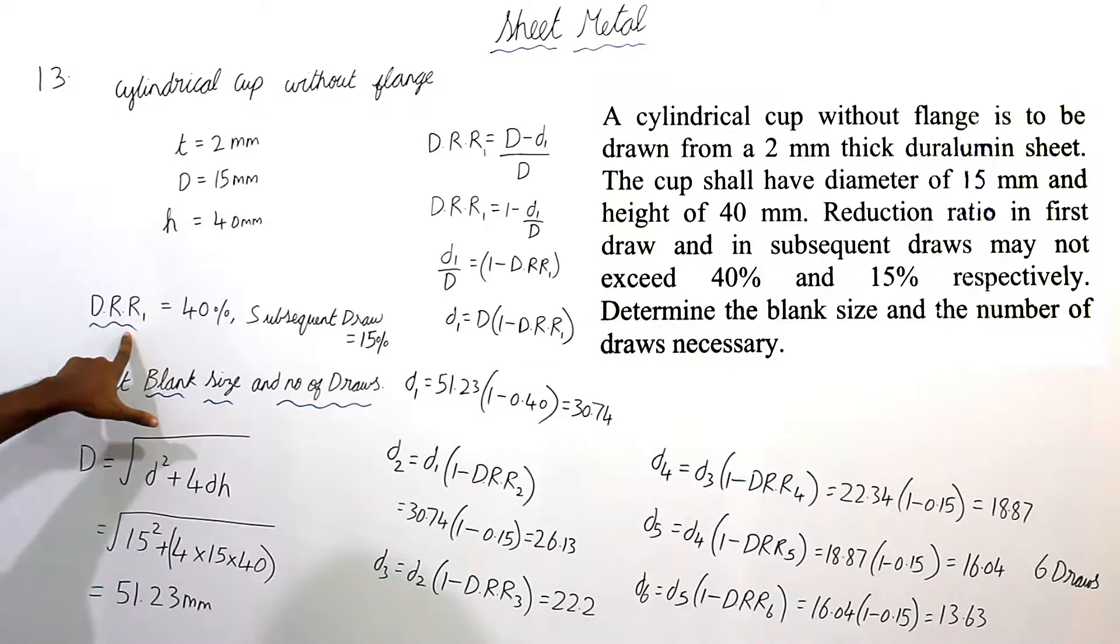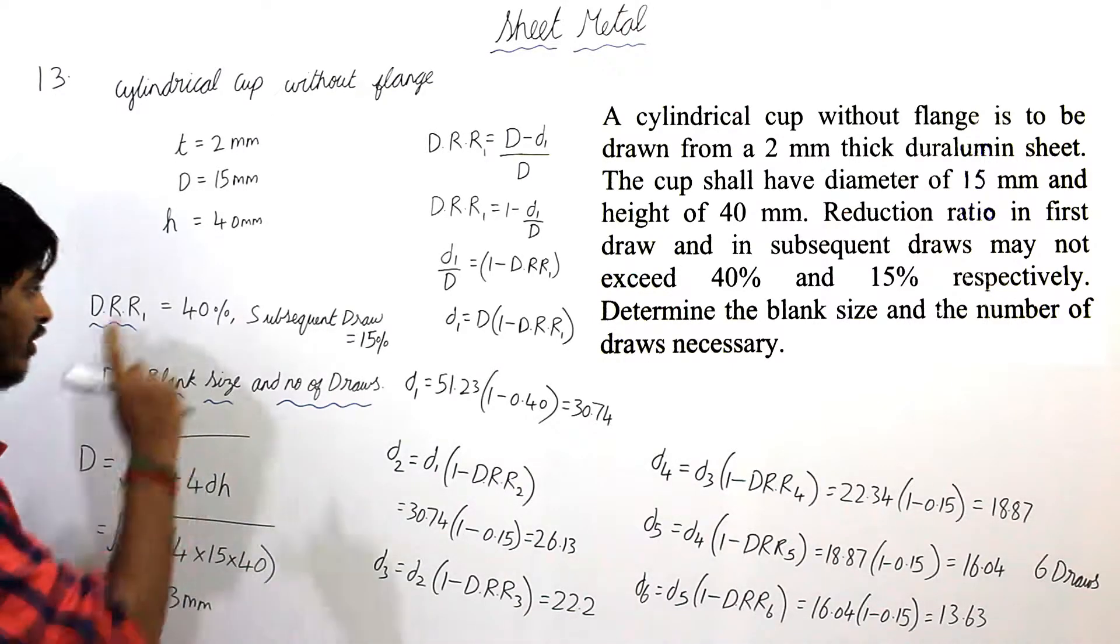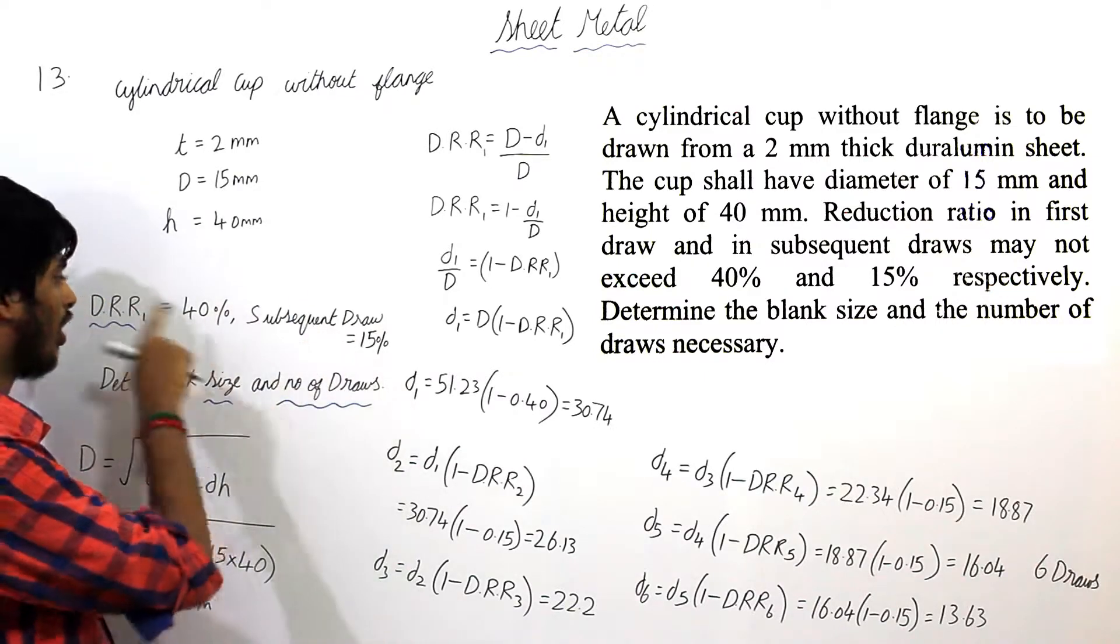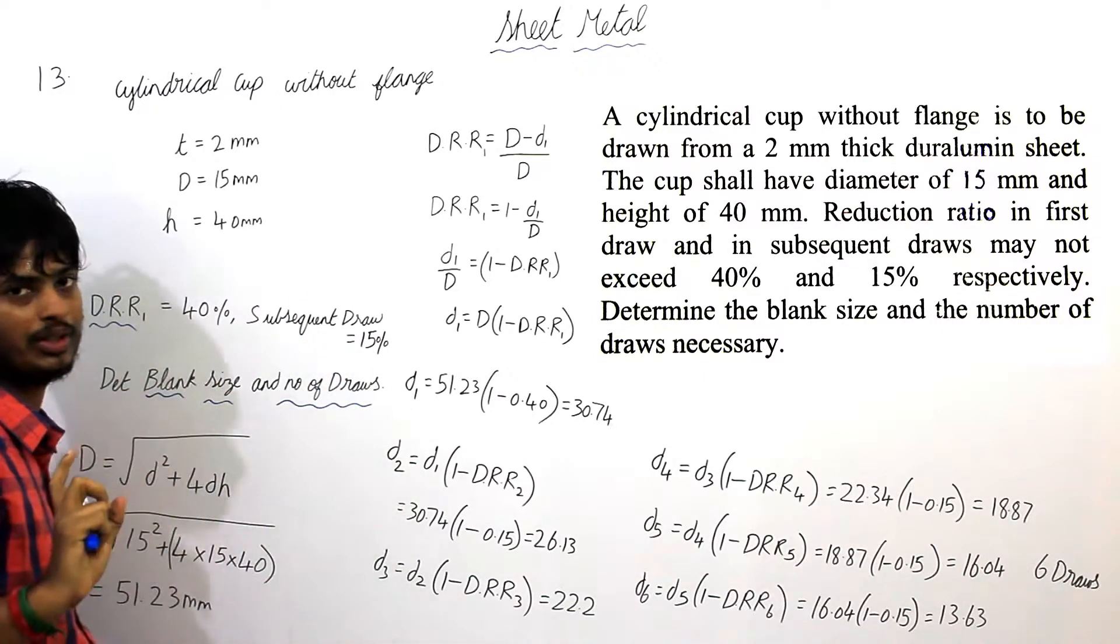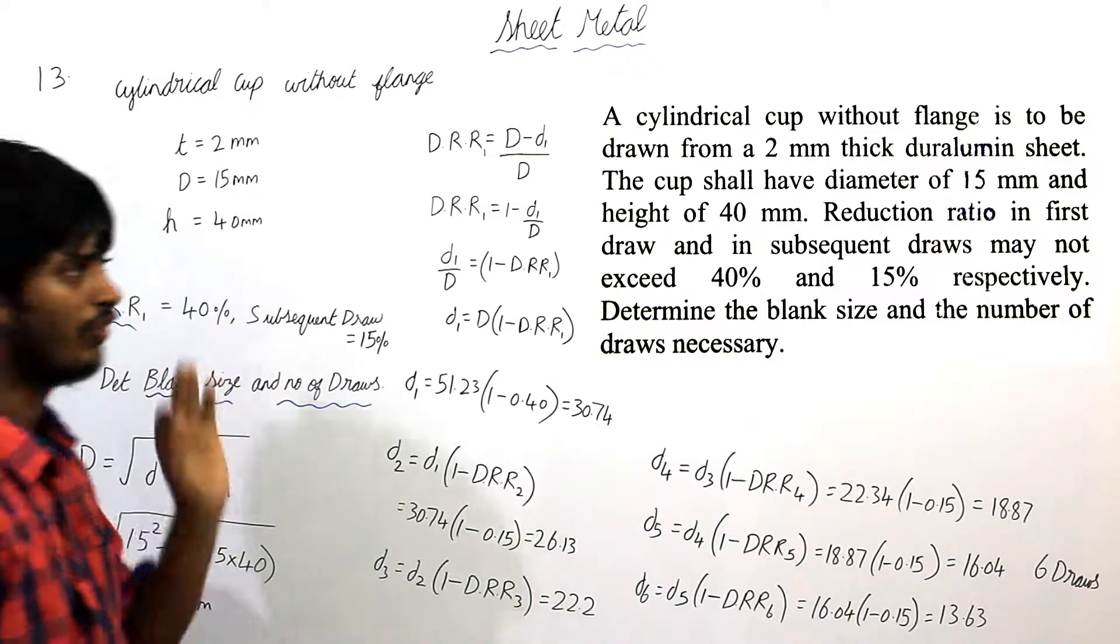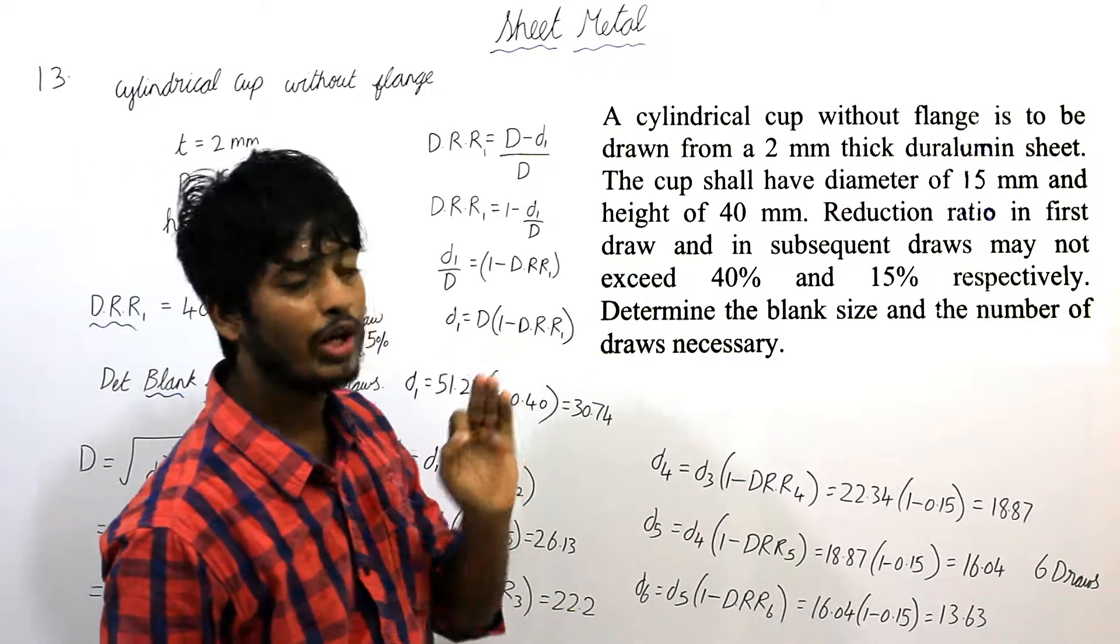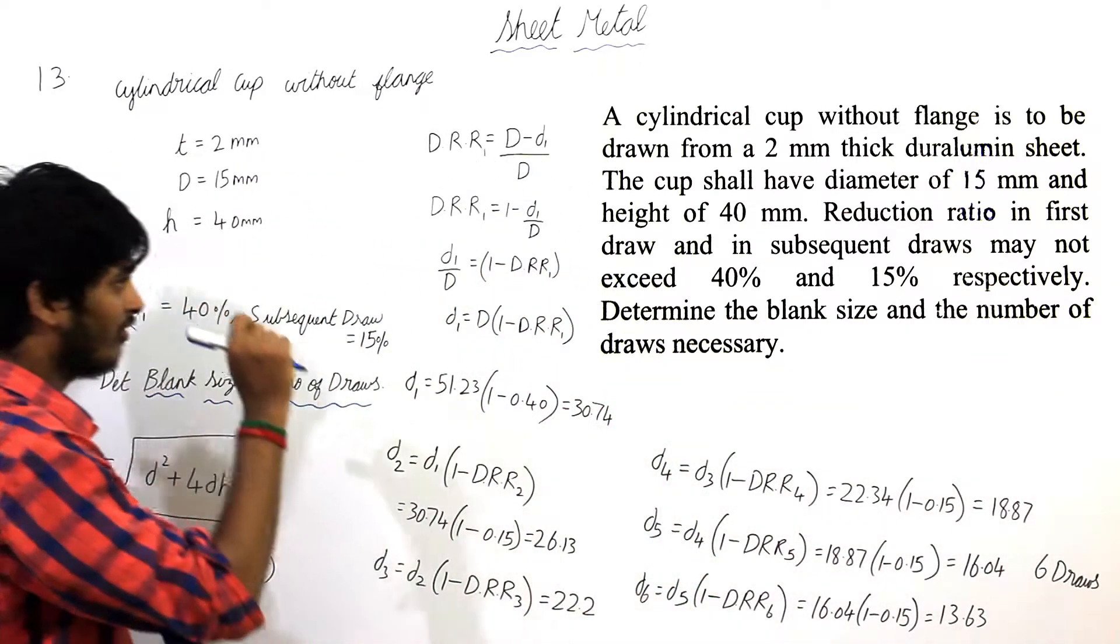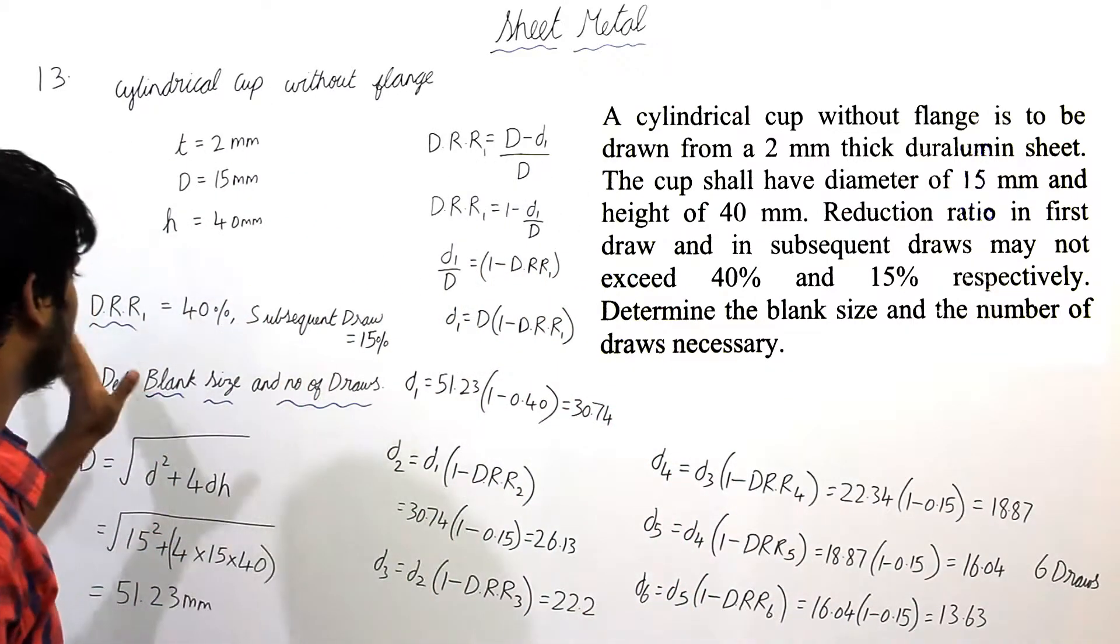And they have given draw reduction ratio for first draw is 40% and for every subsequent draw after the first draw is 15%. So from the given question we first have to know whether it is draw ratio method or draw reduction ratio method. They have clearly given draw reduction ratio method.